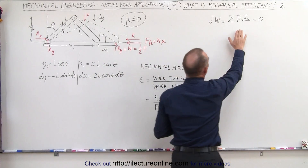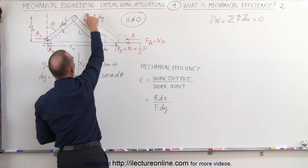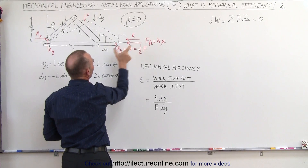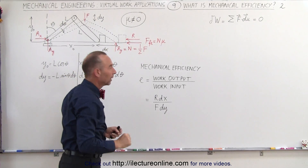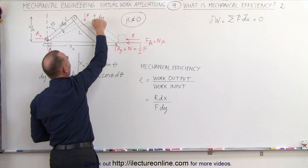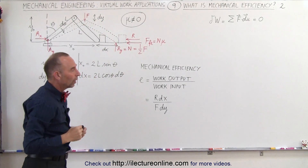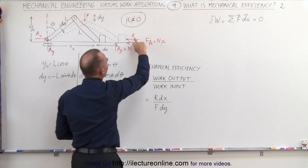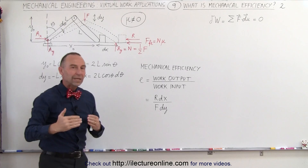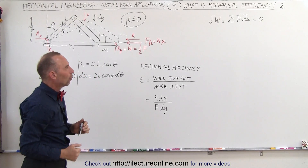We're going to add up all the forces that are doing work. In this case there are three: this force acting through this distance, this force acting through this distance, and this force acting through this distance as well. The first force acts in the same direction as displacement dy, so the angle between them is zero and cosine of zero is one. But in the other two cases, the force acts to the left while the displacement is to the right, so the angle is 180 degrees and cosine of 180 degrees is negative one.